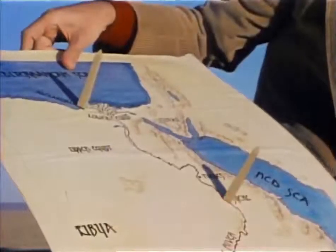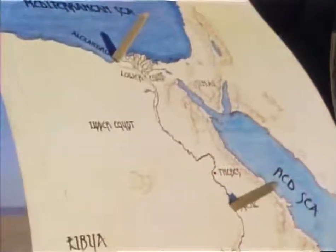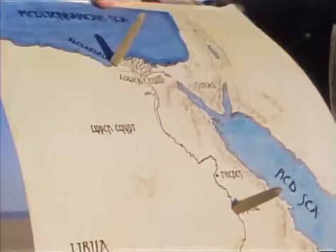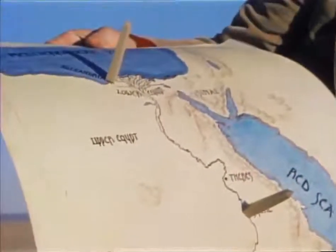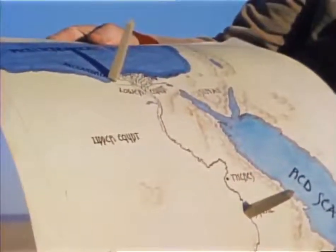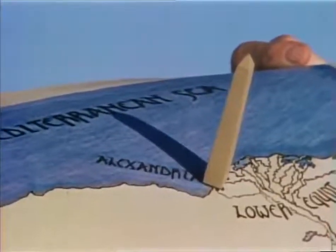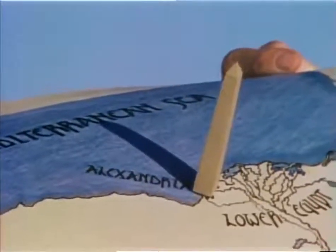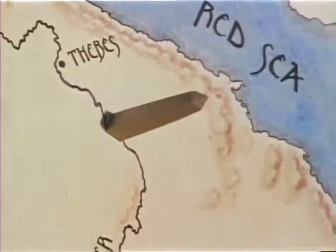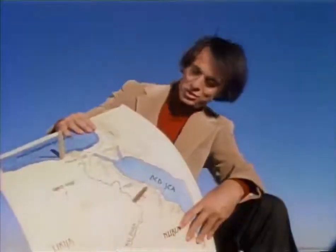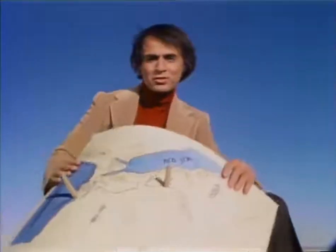But how could it be, Eratosthenes asked, that at the same instant there was no shadow at Syene and a very substantial shadow at Alexandria? The only answer was that the surface of the earth is curved.